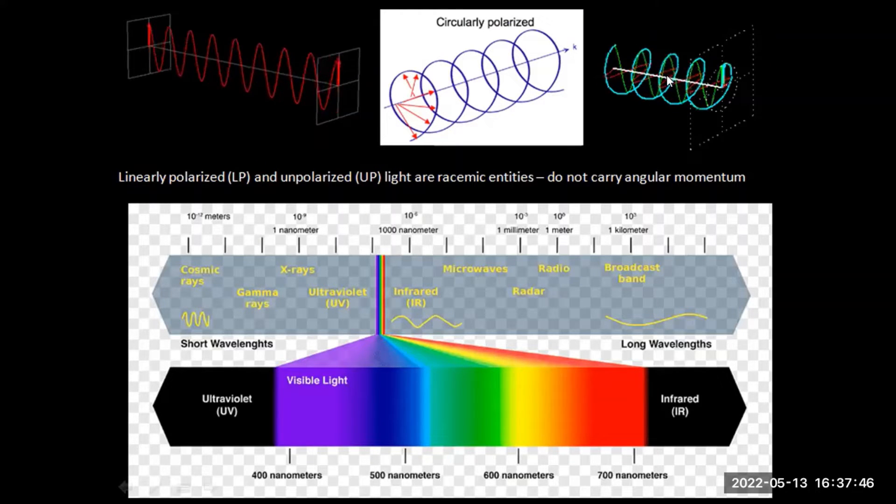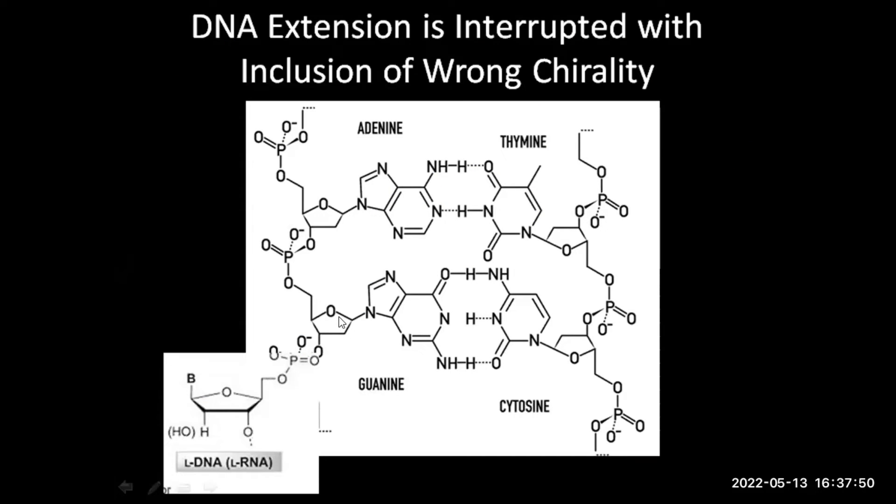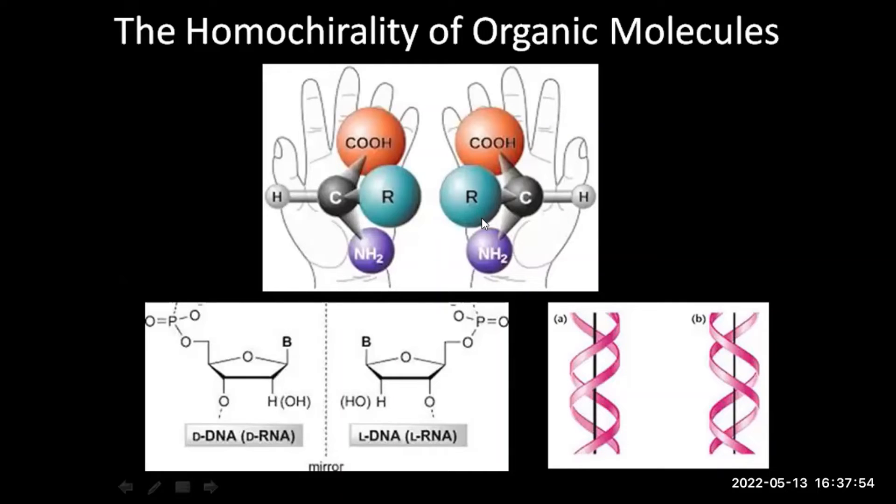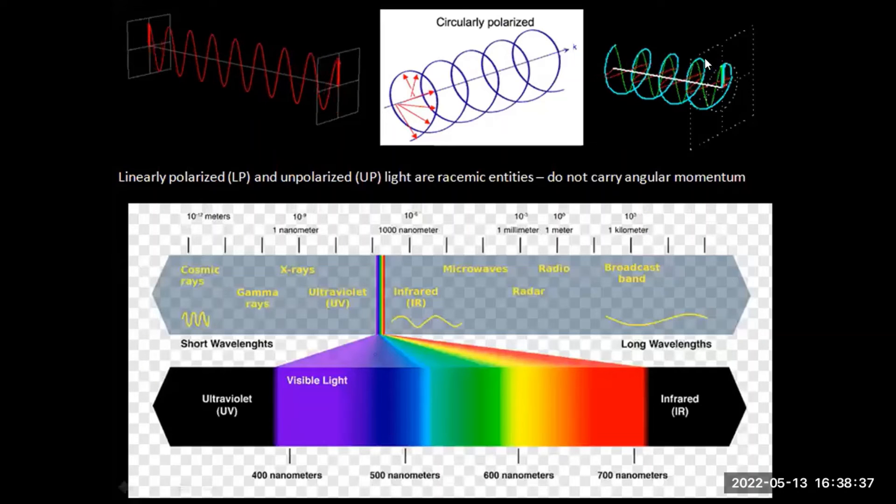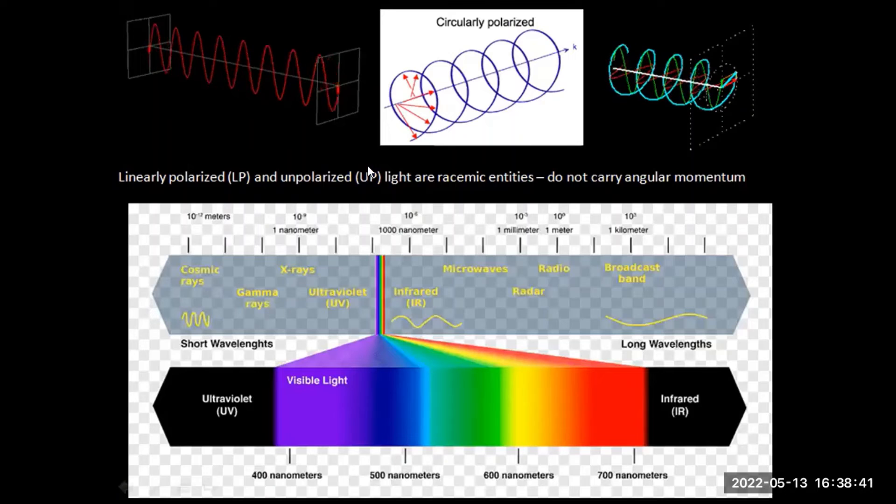And that is interesting light for us because it will help to distinguish between whether we have left-handed or right-handed DNA or we have left-handed and right-handed amino acids. Because there's a little bit difference in absorption. For example, left-handed circularly polarized light will absorb more on left-handed amino acids than on right-handed amino acids and the other way around also.